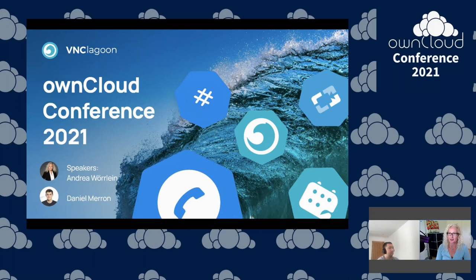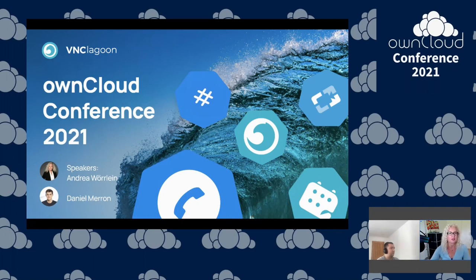Ben will tell you something about that. As ownCloud is an important part of our VNC Lagoon product suite for file sync and share, that created the need to think about having that also on Kubernetes. So let me hand over to Ben.